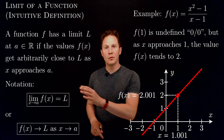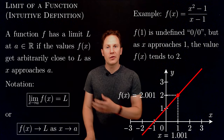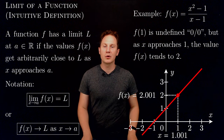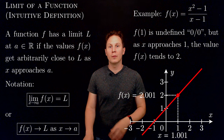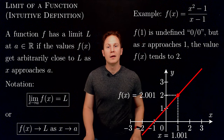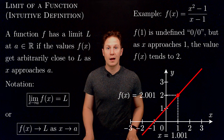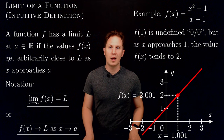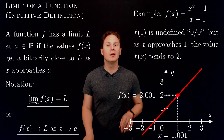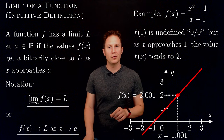Here is the informal definition of the limit of a function. I say informal because later we will update this definition to be more formal and precise, but for now let's say that the function f has a limit L at the point a on the number line if the values f(x) get arbitrarily close to L as x approaches a.